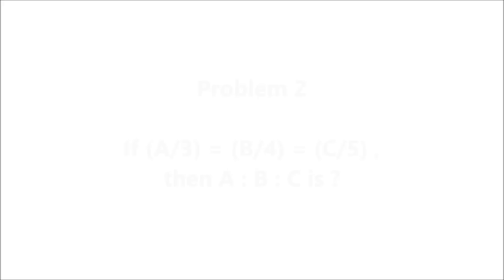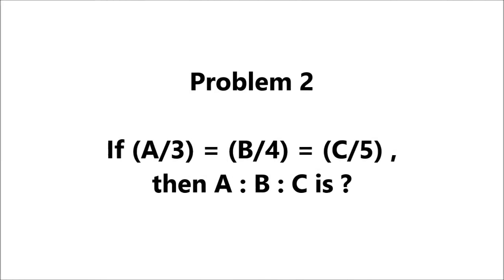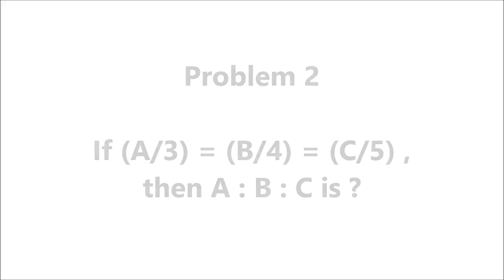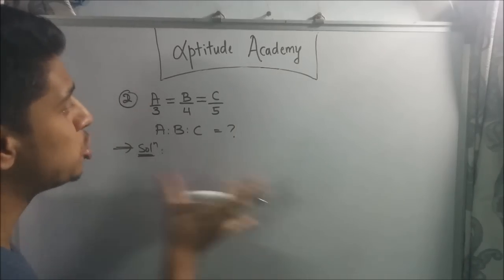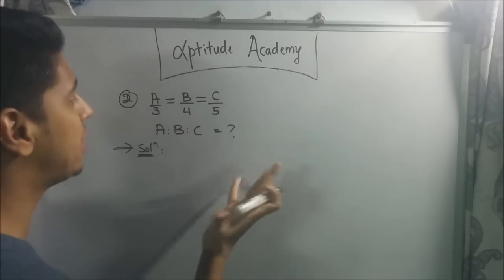Let's move on to problem number 2. Problem 2: If a by 3 equals b by 4 equals c by 5, then a:b:c is? Now the second problem seems super simple because you've done the first problem. Can you guess the answer here? It's going to be 3:4:5.